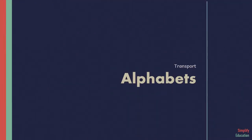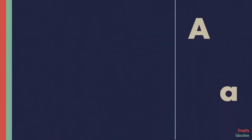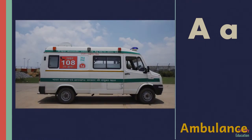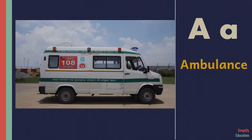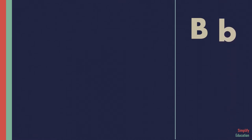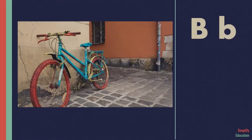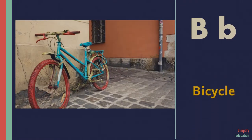Welcome to Simplify Education Alphabet. A for ambulance, B for bicycle.